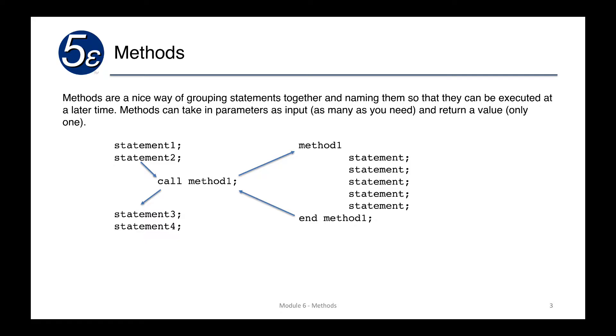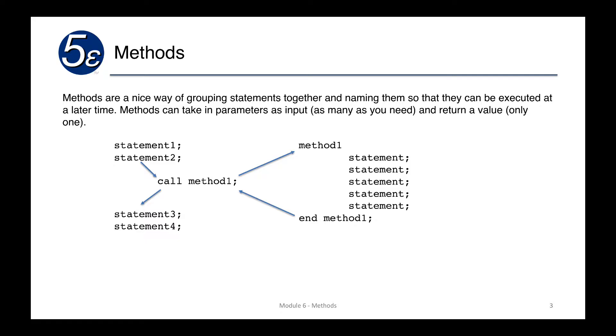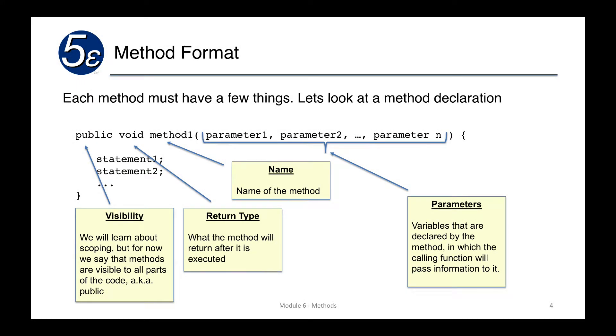The format for methods is very simple. We're going to have some visibility. In this case, we're going to say public. Now this is optional. There are four visibility types with three keywords: public, private, protected, and then none at all. We'll talk about those a little bit later on, but for now we'll just say that it can be there, and for the most part it should be public or we leave it blank. The next one is the return type. In this case, we have void.